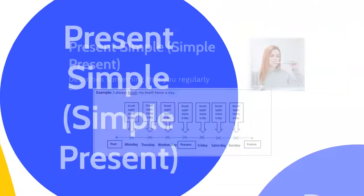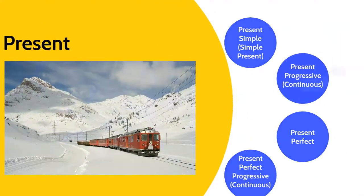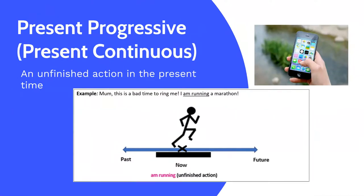The next tense is the present progressive, also known as the present continuous. This shows an unfinished action in the present time. For example, Mum, this is a bad time to ring me. I'm running a marathon. I'm running, the present progressive, shows that the action of running the marathon is still taking place. The person has not finished.